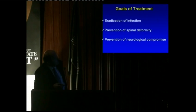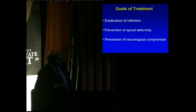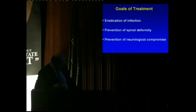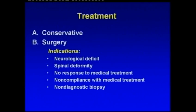Goals of treatment in spinal tuberculosis are eradication of infection, prevention of spinal deformity, and prevention of neurologic compromise. Indications for surgical treatment are neurological deficits, spinal deformity, no response to medical treatment, non-compliance with medical treatment, and non-diagnostic biopsy.